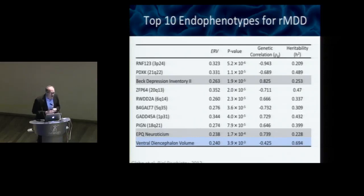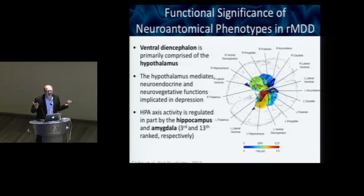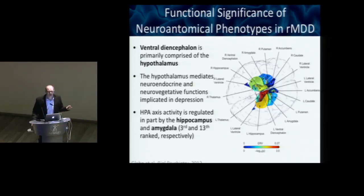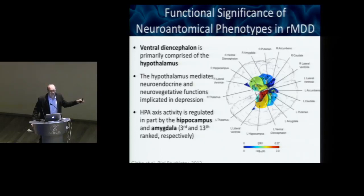We also got a brain region — the ventral diencephalon. It's a term from one of the FreeSurfer atlases and is primarily composed of the hypothalamus. That makes sense: the hypothalamus mediates neuroendocrine and neurovegetative functions implicated in major depression, and if you lesion the hypothalamus in animals, you get something that looks like depression. What we're suggesting here is that the volume of that region is associated with genetic liability for the illness — extending beyond just current function to genetic liability.